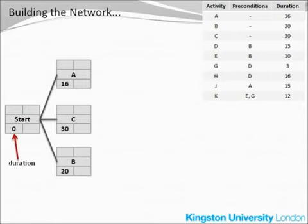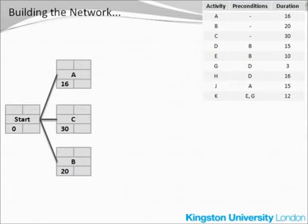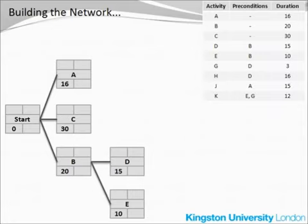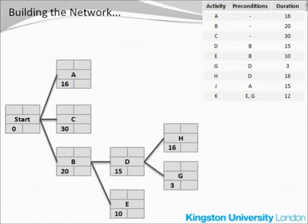We also put the duration into each of the activity boxes. For the start node it's always zero; for every other node, the values can be easily found in the table. Now we are ready to move on to activities D and E. According to the table, the precondition for both of them is activity B, so activities D and E will follow immediately after activity B. There is no activity F — the letter F is often omitted to avoid confusion with the letter E. Let's move on to activities G and H. For both of them the precondition is D, so they simply follow activity D.